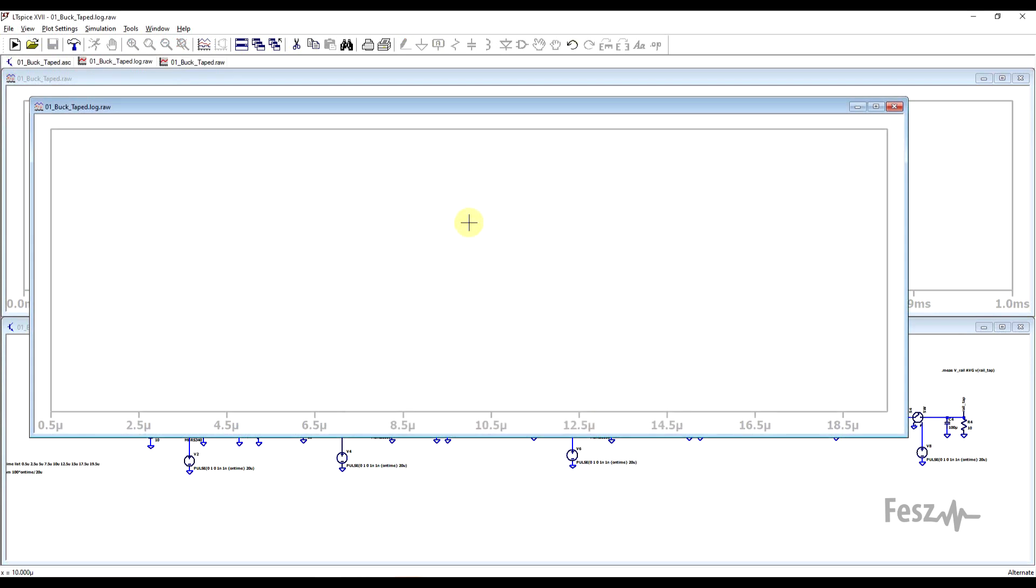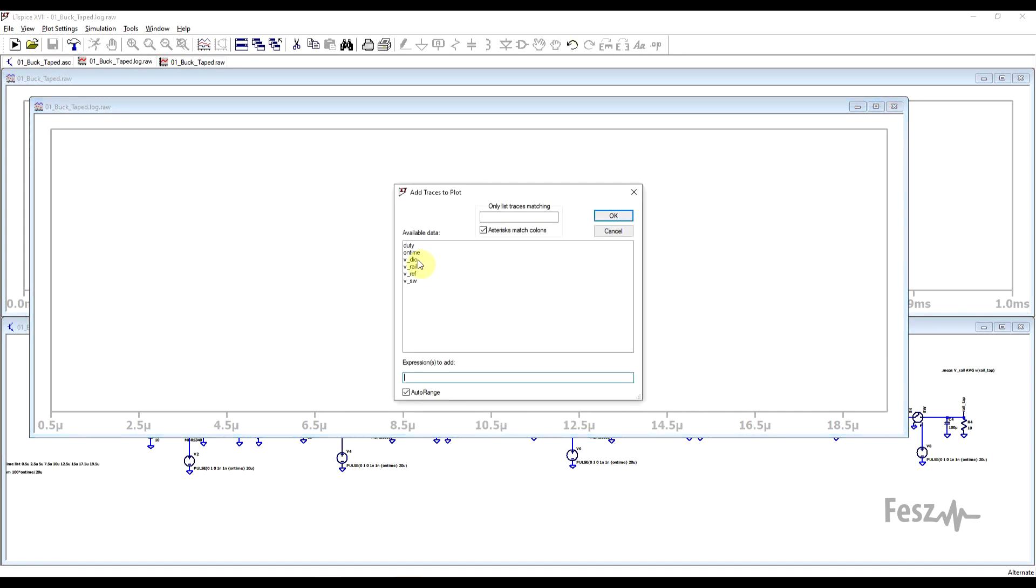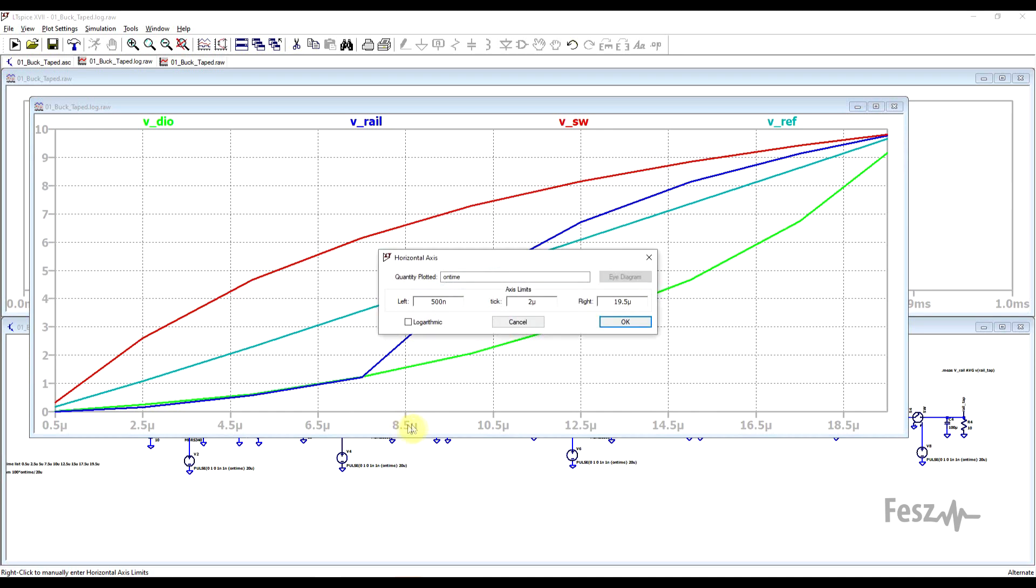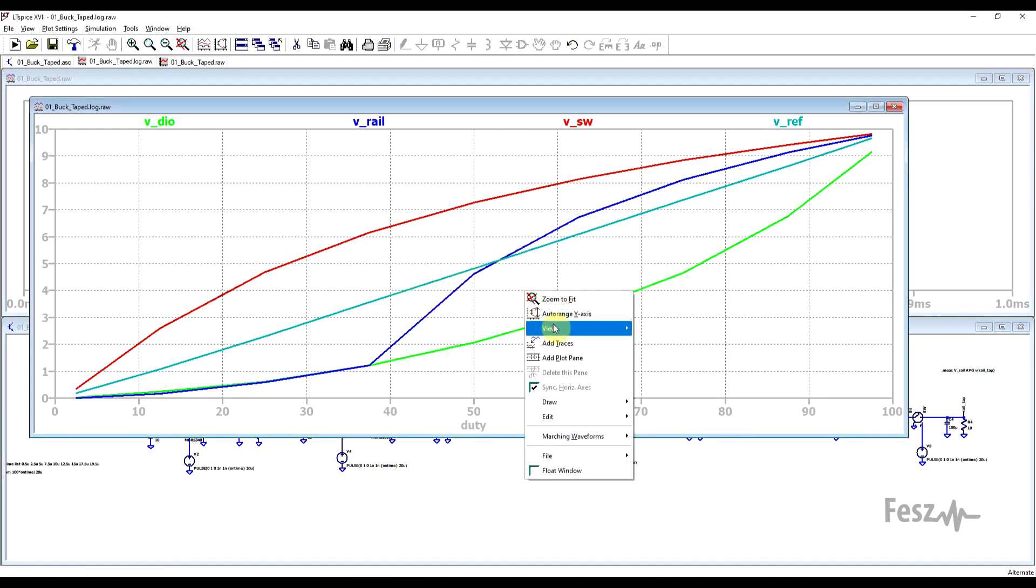And while a new window appears which is blank, so to make this a bit more interesting, we need to right-click again inside of this window and select add traces. So here we want to plot out the output voltage for the diode, rail, and switch tapped converters as well as for our reference. And to make things a bit more clear, we can also set the horizontal axis to rather than be the on time, to be our duty cycle parameter. And final thing, we can also select mark data points. So these will be the actually simulated data, everything else is just interpolation.